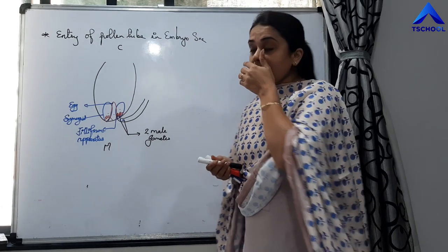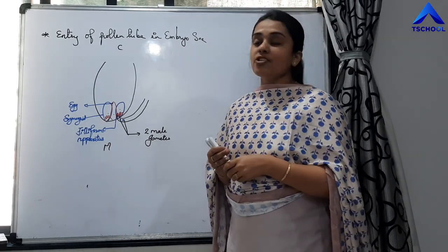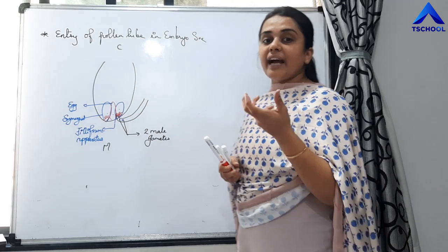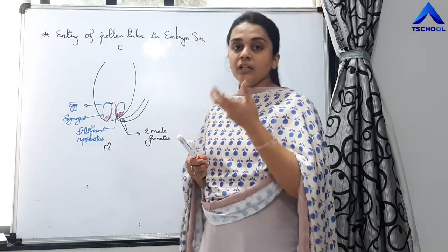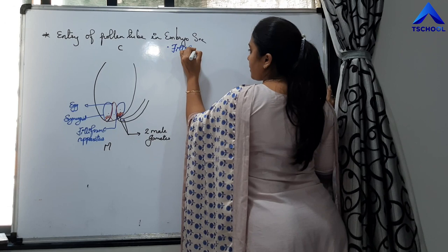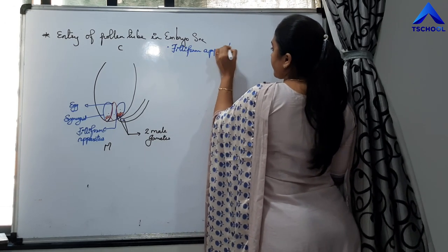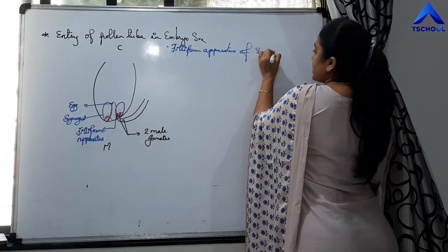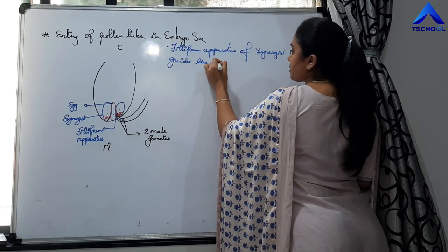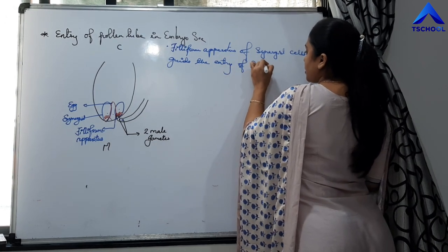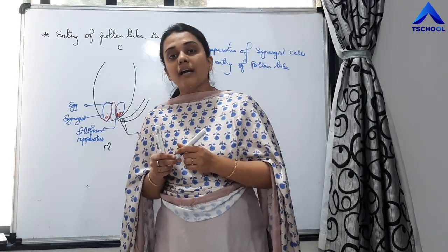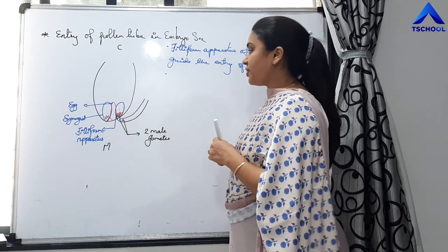What happens when the pollen tube enters the embryo sac? Synergid cells guide the entry. Precisely, the filiform apparatus of the synergid cells guides the entry of the pollen tube into any one of the synergid cells.